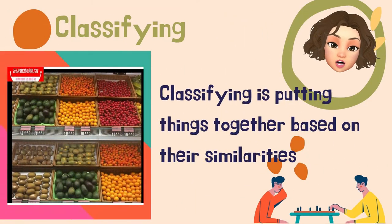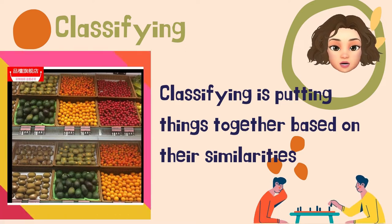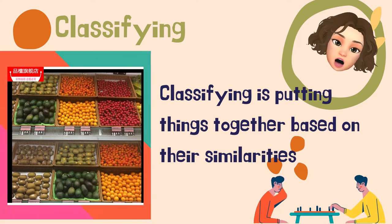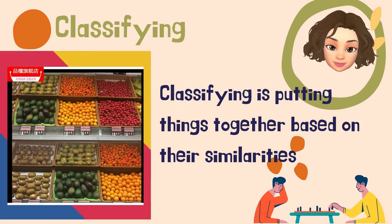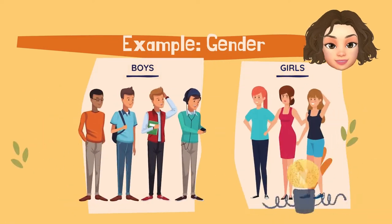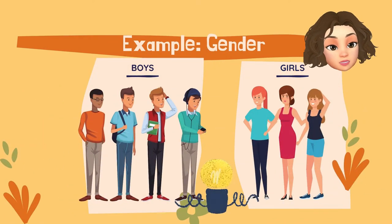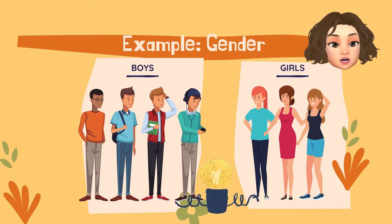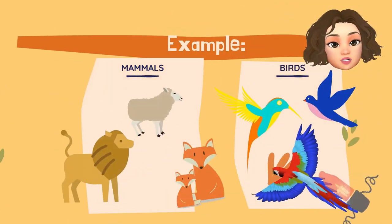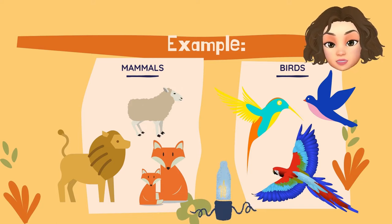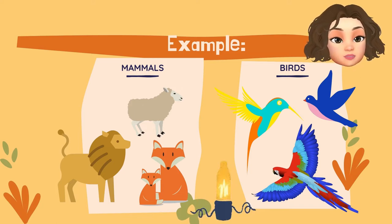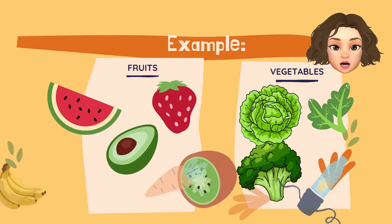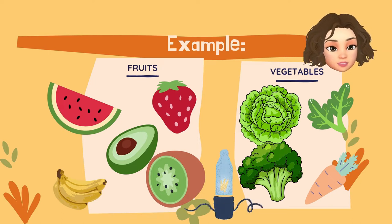Next, we have classifying. Classifying is putting things together based on their similarities, just like what we see in our supermarket — they are grouped according to their similarities. For example, they are grouped according to their gender, which is boy and girl. We also have different groups of animals, such as the group of mammals and the group of birds. We also have a group of fruits and vegetables.